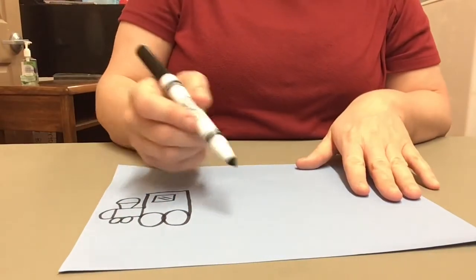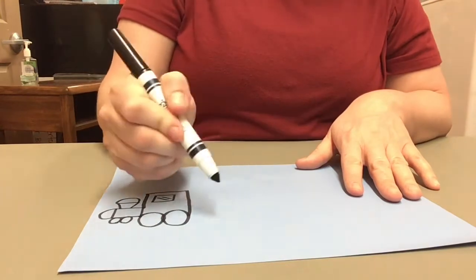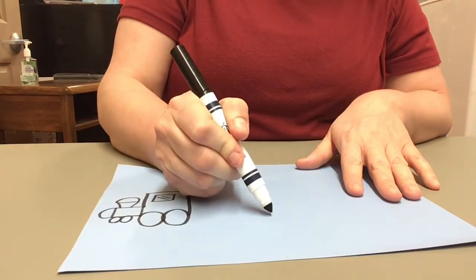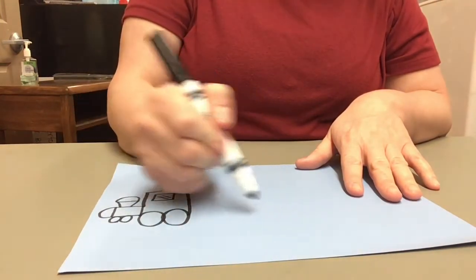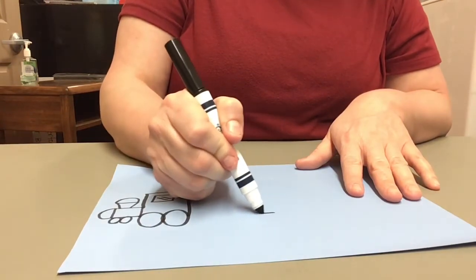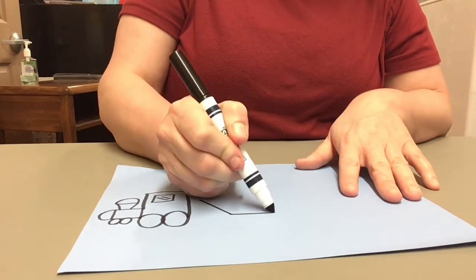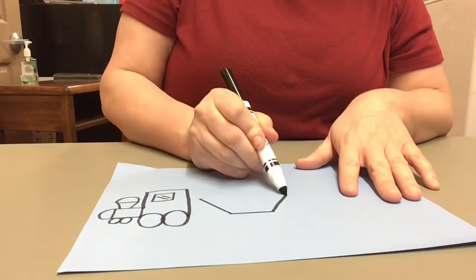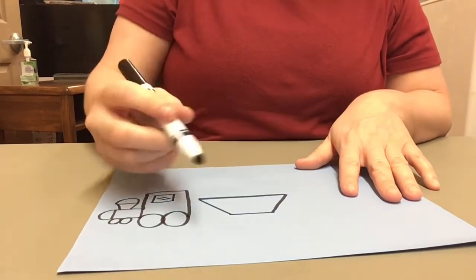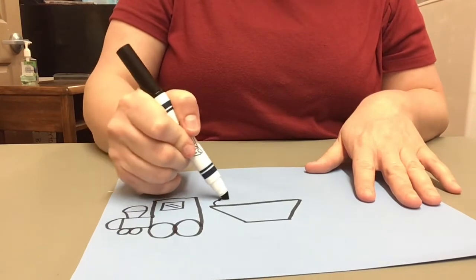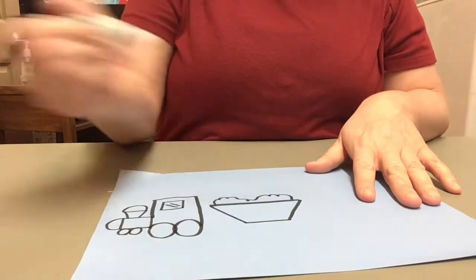Now let's do a big trapezoid. So I'm going to start right about here because I'm going to connect it to my engine. This is going to be the bottom. I'm going to bring it out, out, and across. Because this is where my coal is going to be for my coal car.